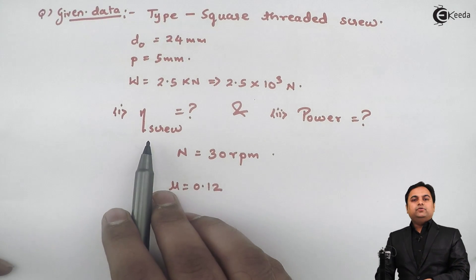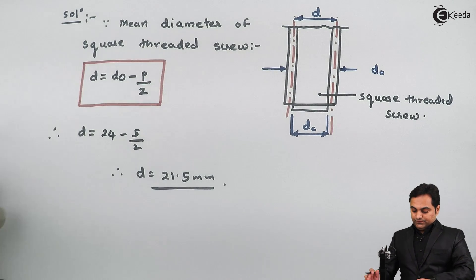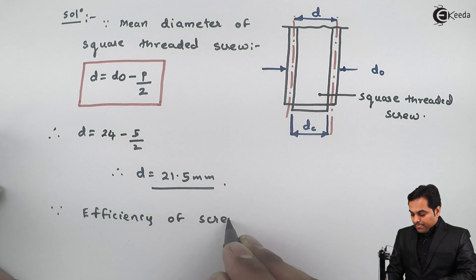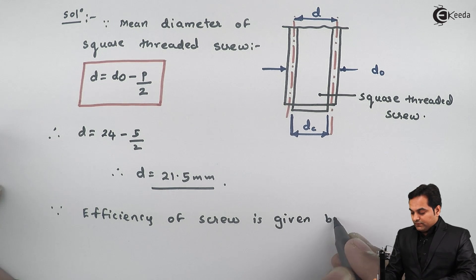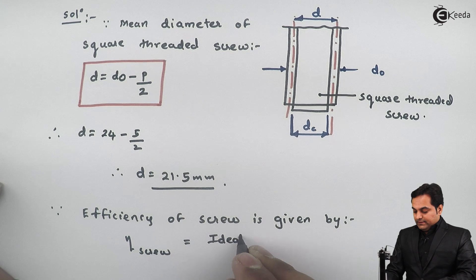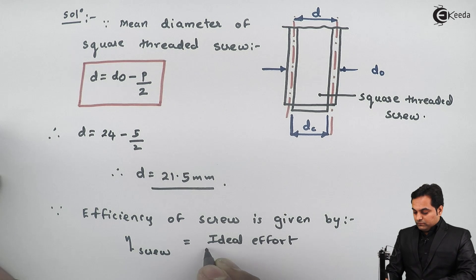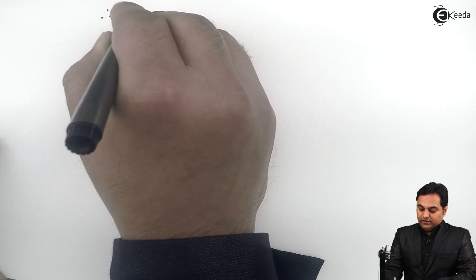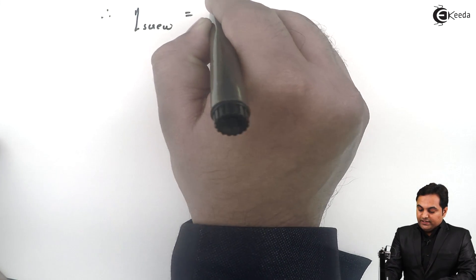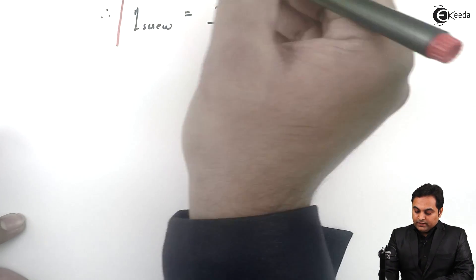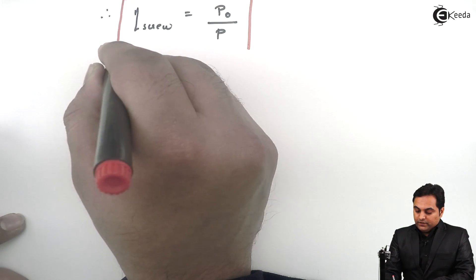The first question is to calculate the efficiency of the screw. The efficiency of the screw is given by the formula: efficiency = ideal effort divided by actual effort. Therefore, eta screw = P0 divided by P, where P0 is the ideal effort and P is the actual effort. I will keep this as equation number 1.